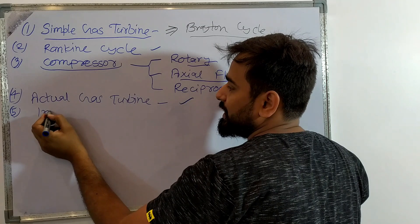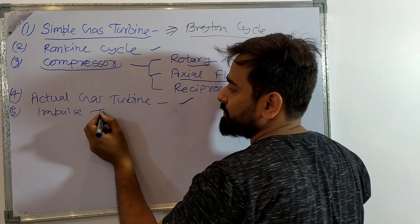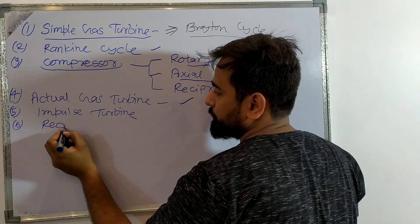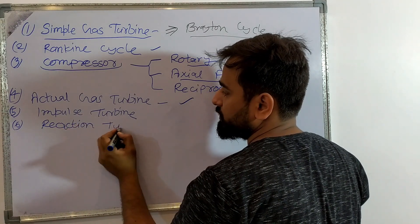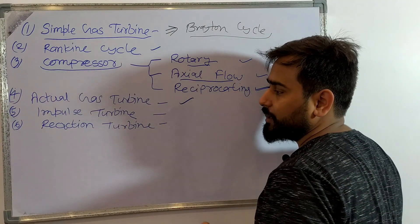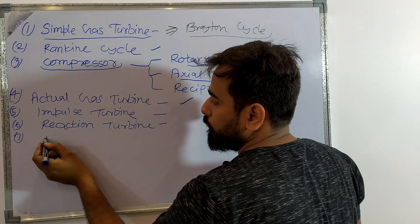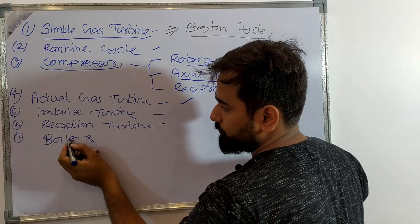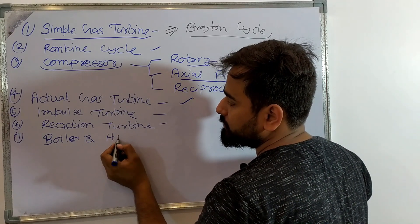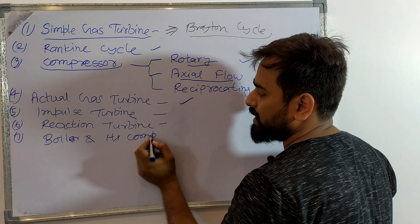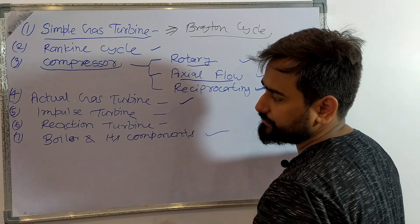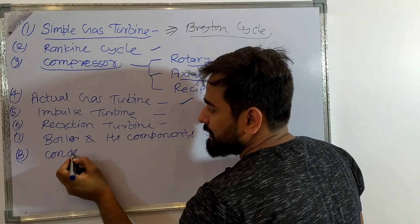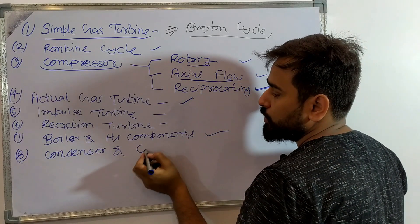In the fifth chapter we will talk about the impulse turbine. Here we will talk about the impulse turbine and the reaction turbine. After that we will start the boilers chapter — boilers and their components. We will see the components in the seventh and eighth chapters. Then we have condenser and cooling towers.